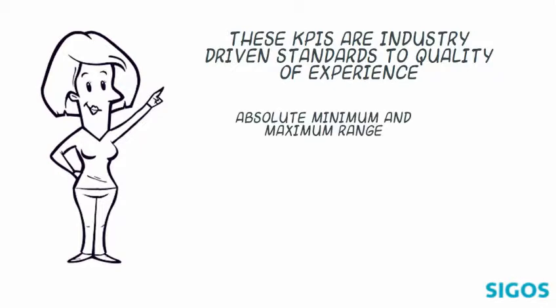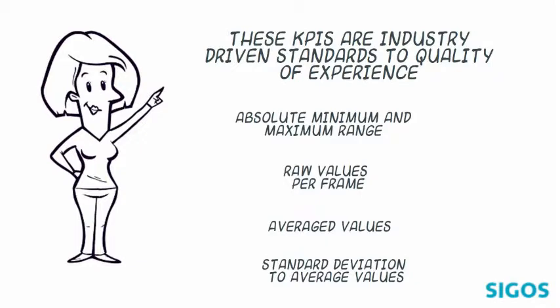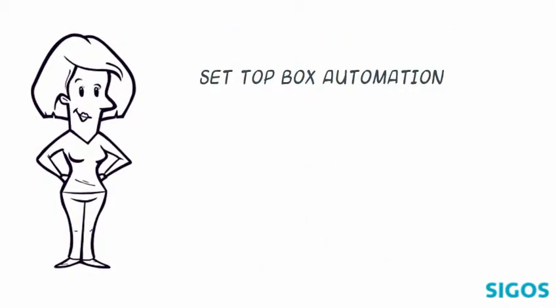The KPIs have an absolute minimum and maximum range, and are shown as a list of raw values per frame, average values, and the standard deviation to those average values.